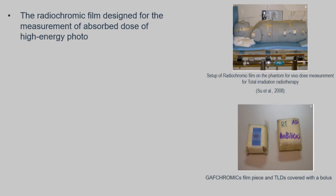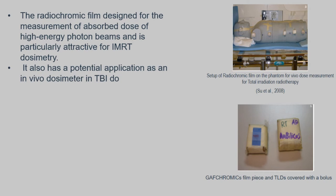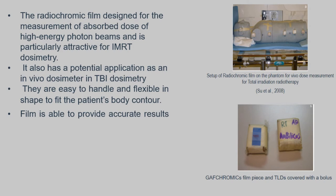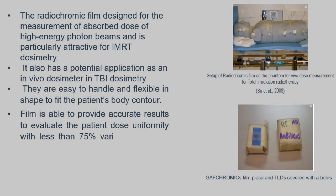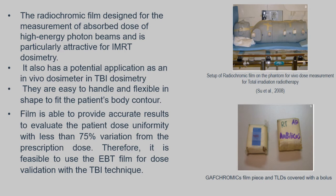The radiochromic film is designed for measurement of absorbed dose of high energy photon beams and is particularly attractive for MRT dosimetry. It also has potential application as an in vivo dosimeter in TBI dosimetry. Films are easy to handle and flexible in shape to fit the patient's body contour. Film is able to provide accurate results to evaluate patient dose uniformity with less than 7.5% variation from the prescription dose. Therefore, it is feasible to use EBT film for dose validation with the TBI technique. The image shows the setup of radiochromic film on a phantom for in vivo dose measurement, and the below image shows radiochromic film pieces and TLDs covered with a bolus.